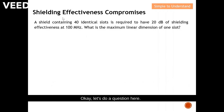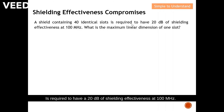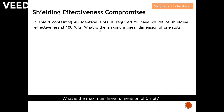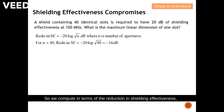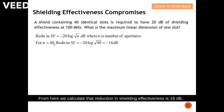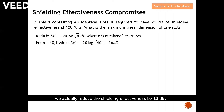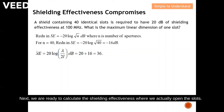Let's do a worked example. A shield contains 40 identical slots and is required to have 20 dB of shielding effectiveness at 100 MHz. What is the maximum linear dimension of one slot? We compute the reduction in shielding effectiveness due to 40 identical slots. Using the square root of N formula, the reduction in shielding effectiveness is 16 dB. This means that 40 identical slots reduce the shielding effectiveness by 16 dB.